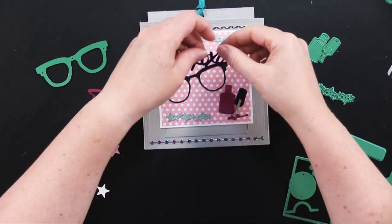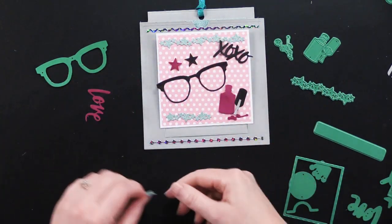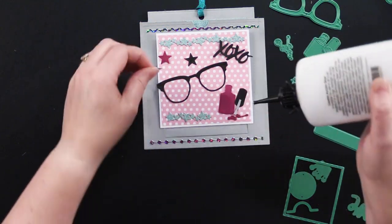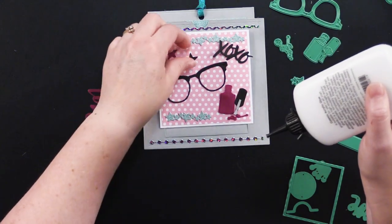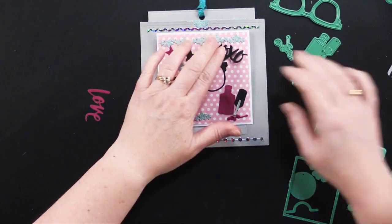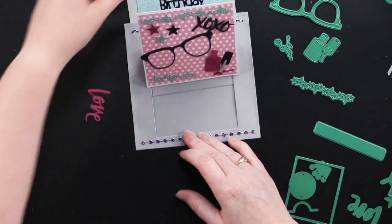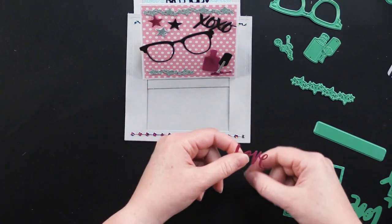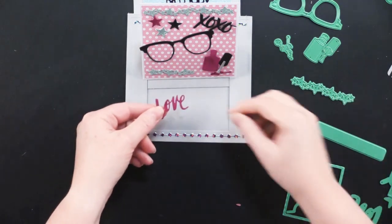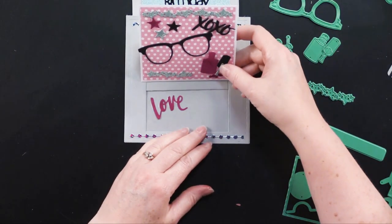And what I did is I die cut this out of black and then also out of gray. And then I just cut away from the gray the little brush part. Did a little paper piecing there and glued the brush onto the black. There we go. Fun piece. And we've got cute little hugs and kisses. And some stars. And then when I open this up, we're going to add another element to the inside.